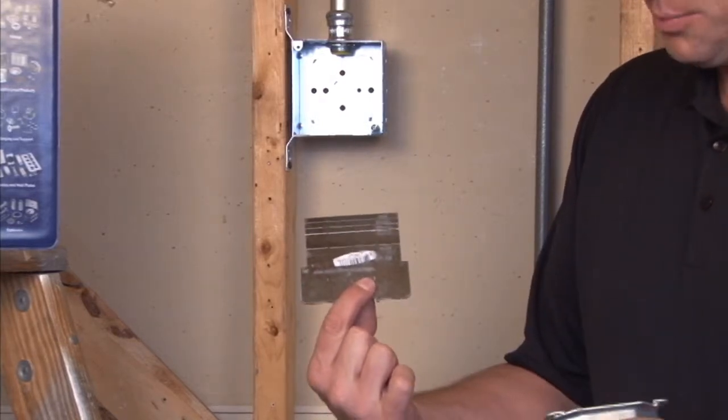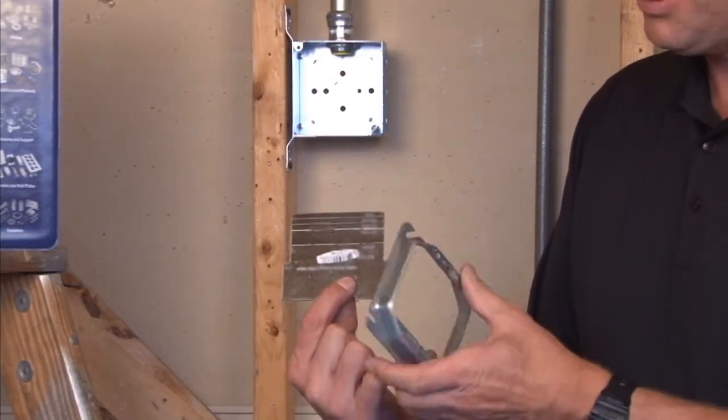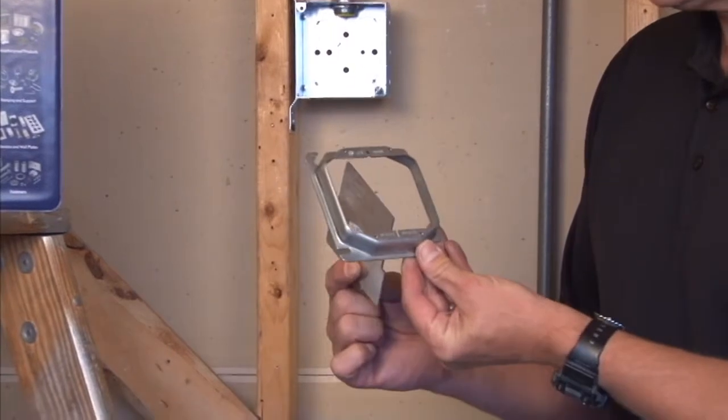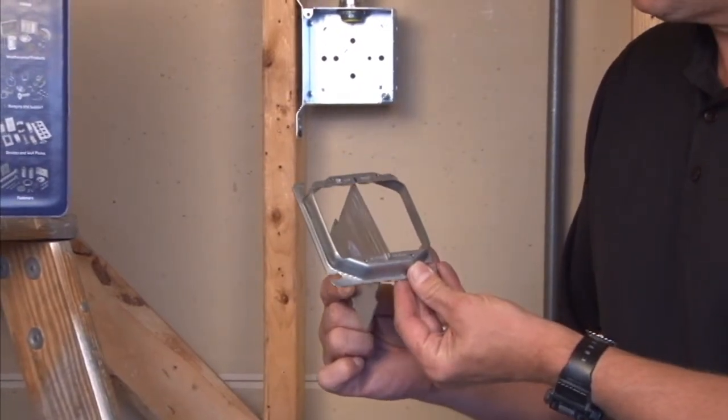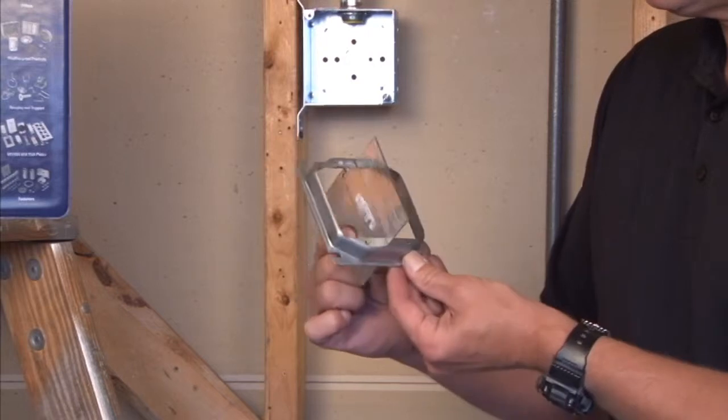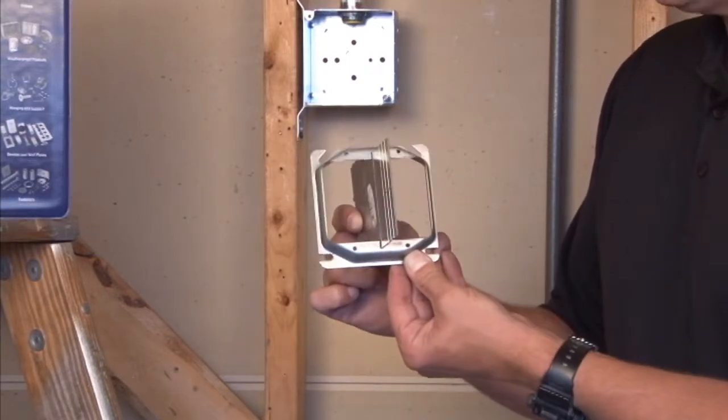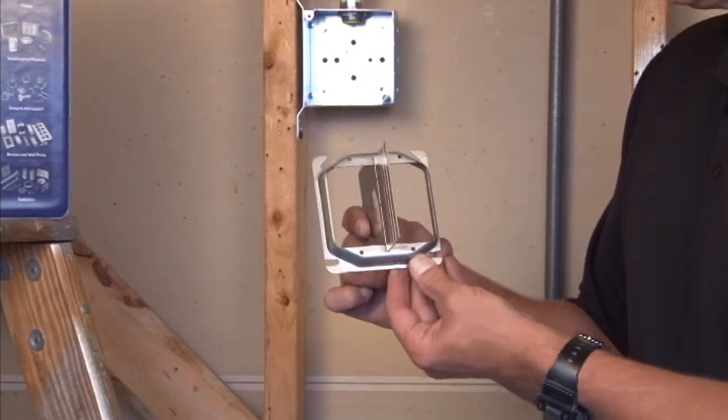install this product is to take your two-gang plaster ring and slide the partition through the slot prior to installing the ring on the box.